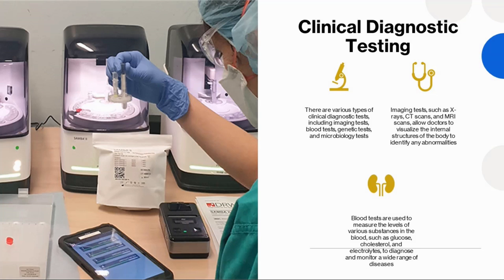Blood tests are used to measure the levels of various substances in the blood, such as glucose, cholesterol, and electrolytes, to diagnose and monitor a wide range of diseases. Genetic tests are used to identify genetic mutations that may be responsible for certain diseases. Microbiology tests involve the culture and analysis of body fluids and tissues to identify the presence of infectious agents.